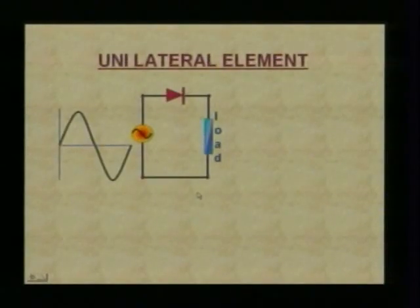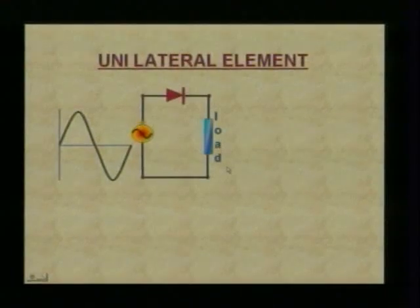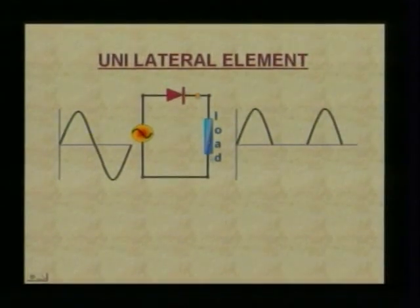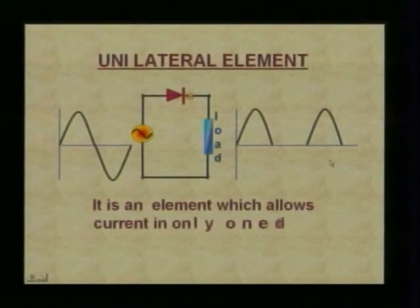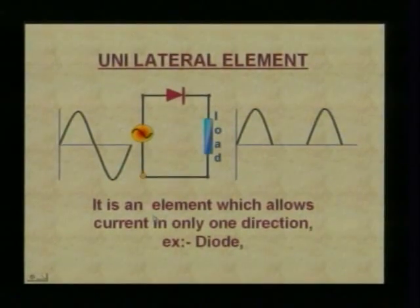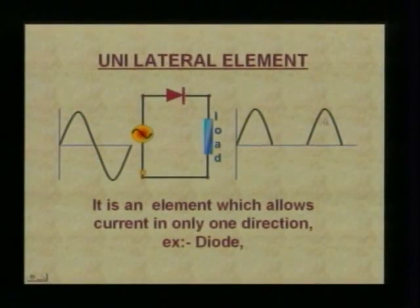Now let us look at a unilateral element. We have an AC source connected to a diode and a load. A unilateral element means the current flows only in one direction — unidirectionally. So if we observe, this is the AC supply and we have got only the positive cycles; the negative cycles are not allowed. It is an element which allows current in only one direction — example: a diode.